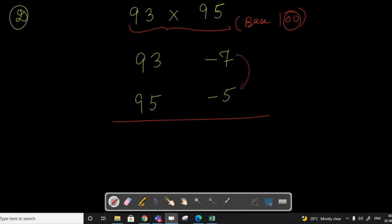We have base 100 here, so we will write the multiplication of negative 7 and negative 5, which is positive 35. Here two digits are coming because of these two zeros.